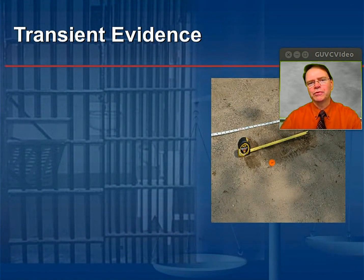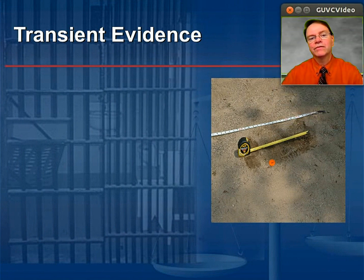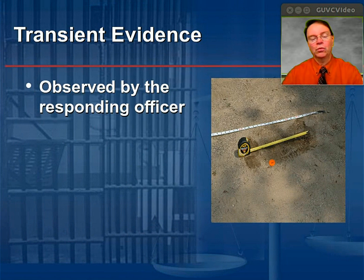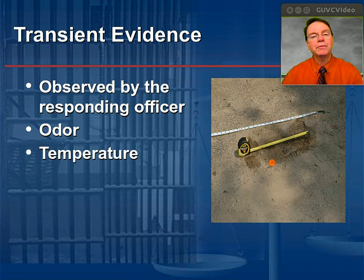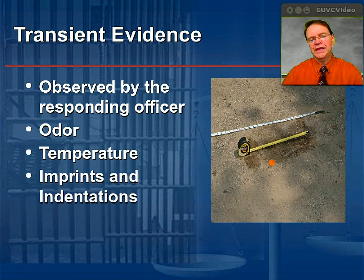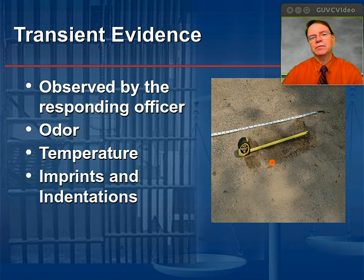What are some examples of these different types of evidence? First, transient evidence — observed by the responding officer. It could be an odor in the room or the location, the temperature of that location, or imprints and indentations on surfaces that may disappear in a short time given wind and rain. If it's raining out, that could destroy the evidence immediately. So it must be captured.